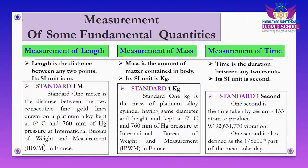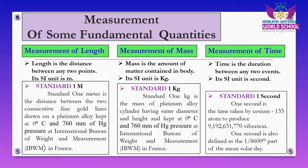Now let me explain the measurement of time. Time is simply the duration between any two events — the gap between any two events. Its SI unit is the second. One standard second is the time taken by a Cesium-133 atom to produce 9,192,631,770 vibrations. In another definition, one second is also defined as one out of 86,400th part of the mean solar day.